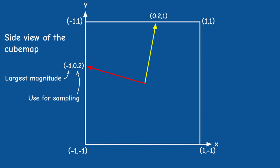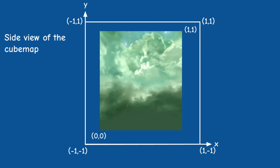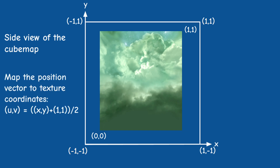You may notice a problem: texture coordinates usually go from 0 to 1, but in this case the range is actually -1 to 1. Don't worry — OpenGL will automatically map this to the correct range by adding 1 to the two remaining components and multiplying by half.